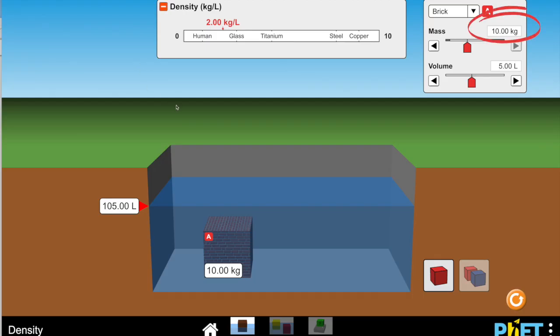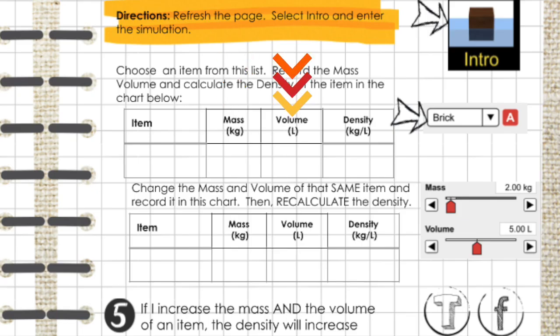The mass of your item can be found here. The volume of your item can be found here. The density of your item is listed over here. Record those values here in your chart.